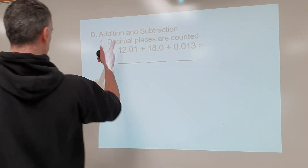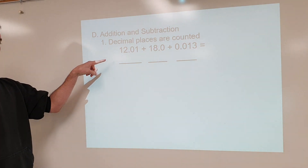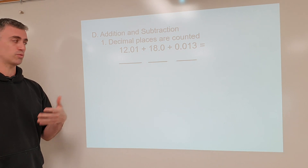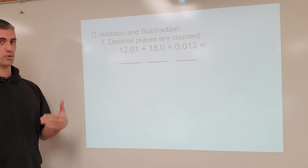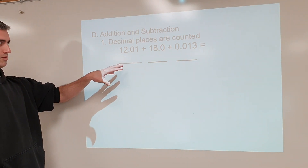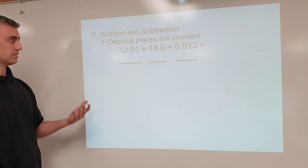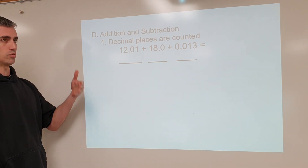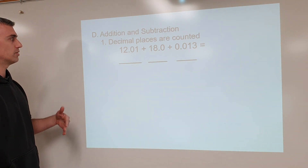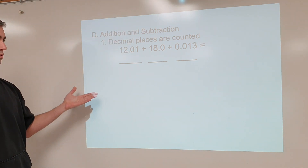Let's talk about addition and subtraction — more specifically, when you do addition or subtraction you get a number, and we need to talk about how to round that number correctly so that it properly reflects the amount of precision in your measurement. As the saying goes, a chain is only as strong as its weakest link; your answer is only as good as the quality of data that went in to produce it. Both addition and subtraction follow the same rules.